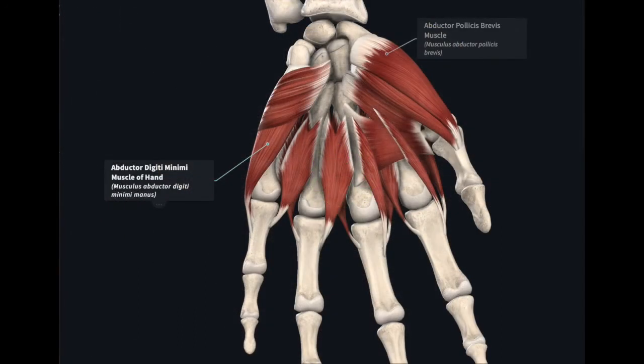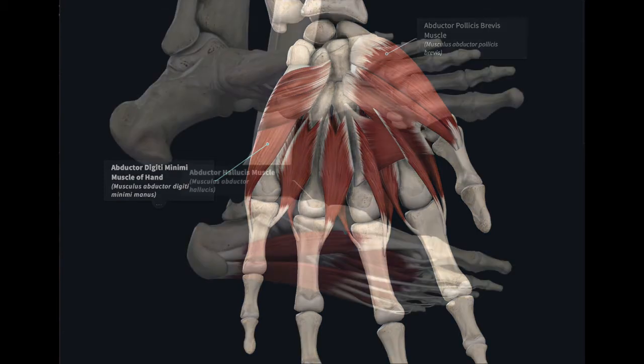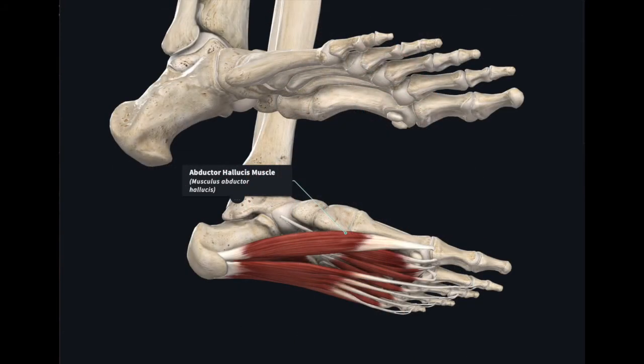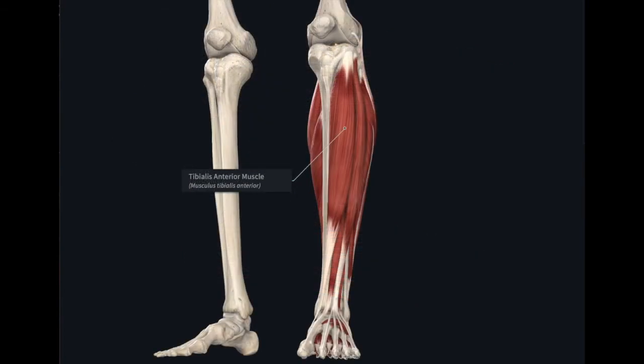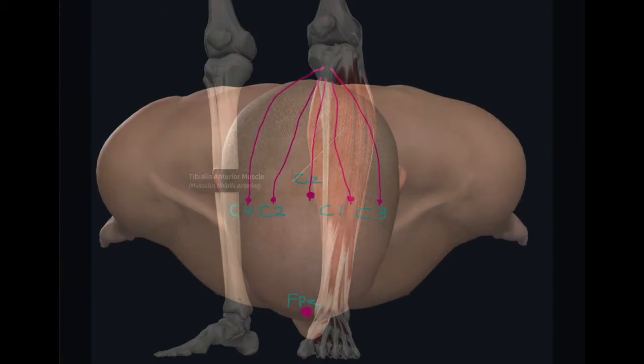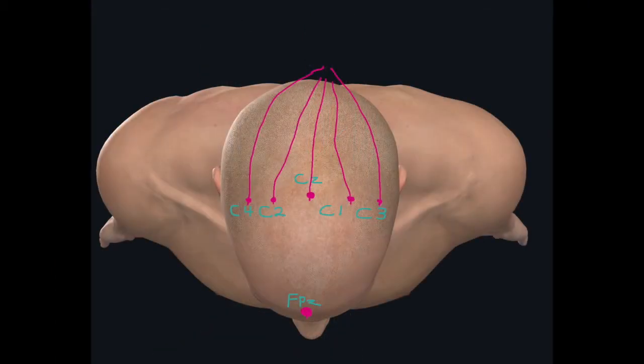Paired subdermal needle electrodes are placed in distal muscles of the upper and lower extremities for recording. Theoretically, motor evoked potentials can be recorded from any muscle. Here are three head lead stimulation needle electrode montages: C3-C4, C1-C2, and CZ-FPZ.